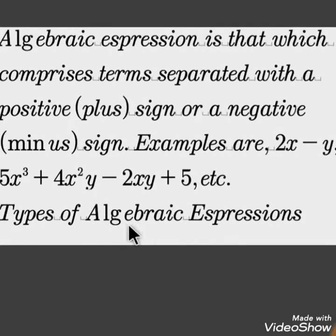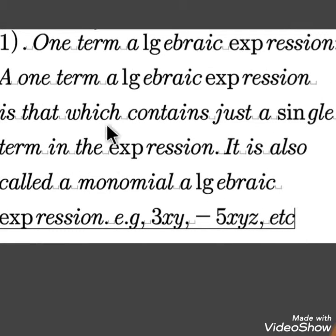Types of algebraic expressions. One-term algebraic expression: A one-term algebraic expression is that which contains just a single term in the expression. It is also called a monomial algebraic expression, e.g., 3xy, minus 5xyz, etc.